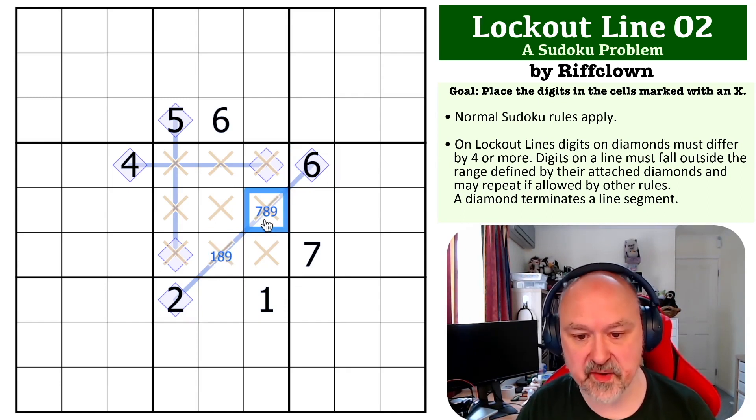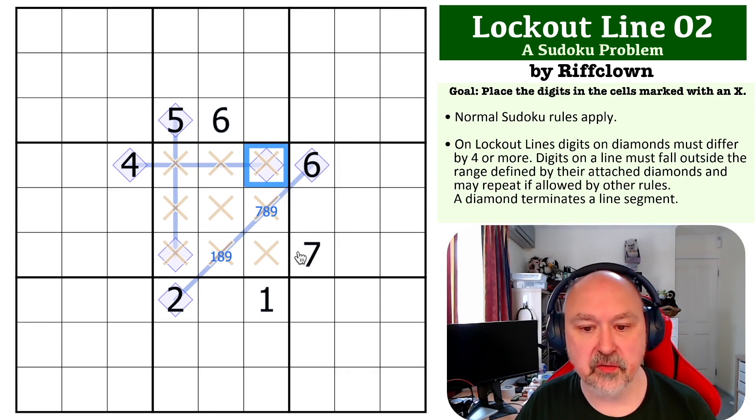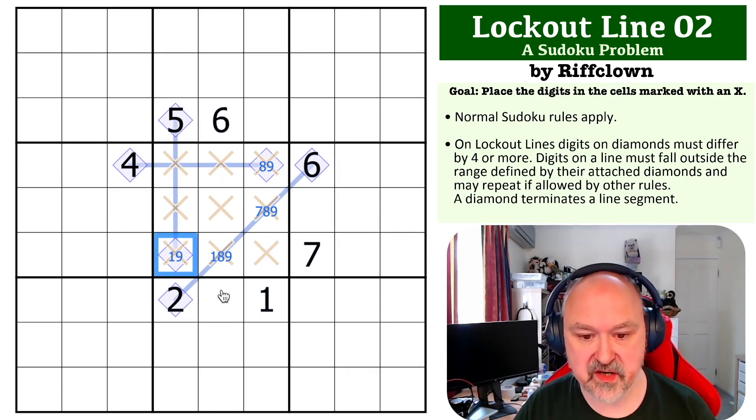This can't be a seven, this can't be a one. The only digits that are four away from four are eight and nine, and the only digits that are four away from five are one and nine. So you get a one, seven, eight, nine quadruple, and this is the only place the seven can go.